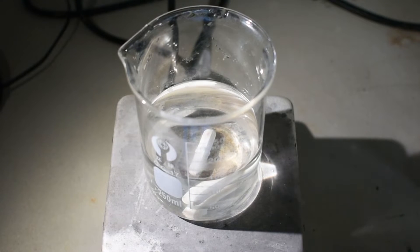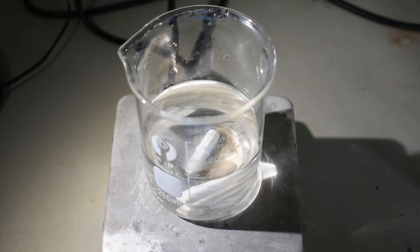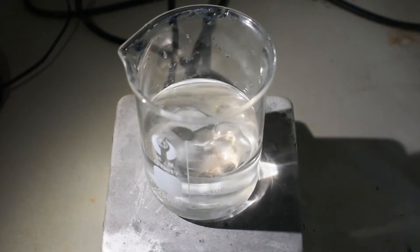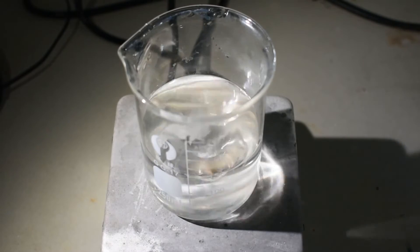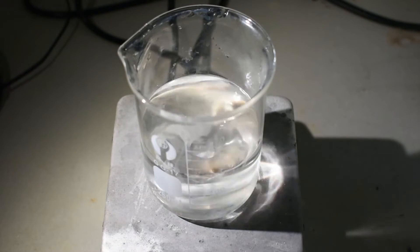Alright, now that everything has dissolved and we have a clear solution, I'm going to turn on the stirring and slowly add some ice cold hydrogen peroxide. Again, I have 30 milliliters of the 35% grade.